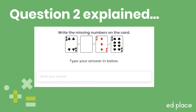Now let's look at question 2. This question is a little different, as the missing number is in the middle of the sentence, which means we should do a subtraction to find the missing number — a subtraction will be the inverse. Using the numbers we've got, let's do 8 take away 4 take away 3, which equals 1. This is telling us our missing number is 1. Let's check our answer using the original addition: 4 add 1 add 3 equals 8. The missing number is 1.